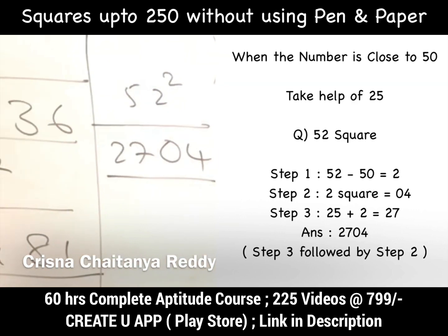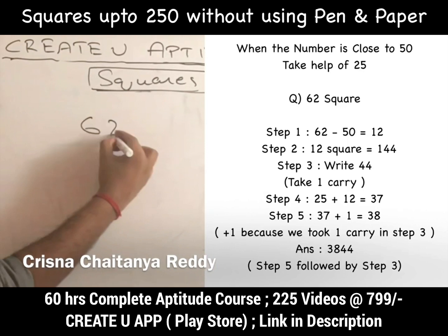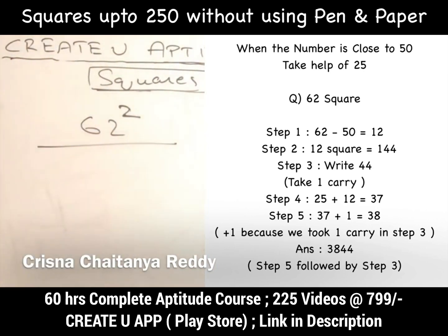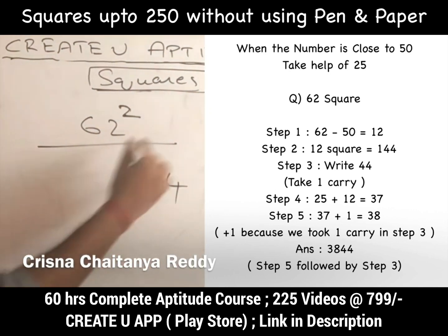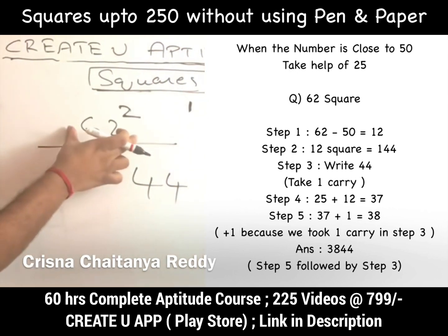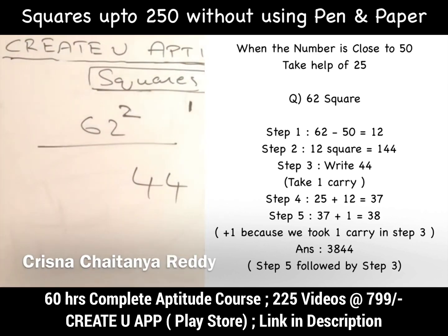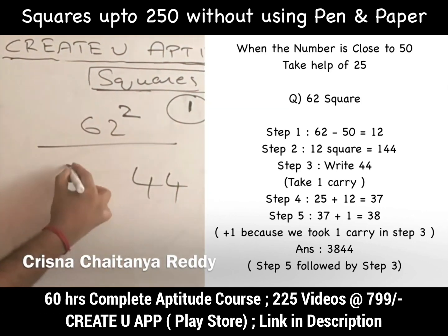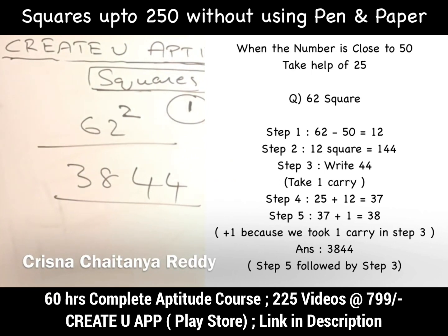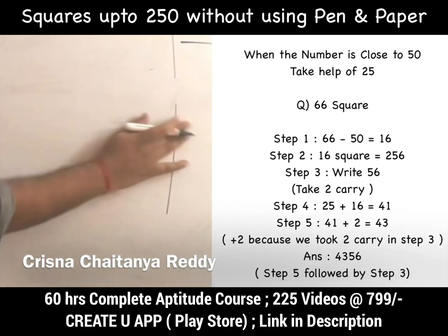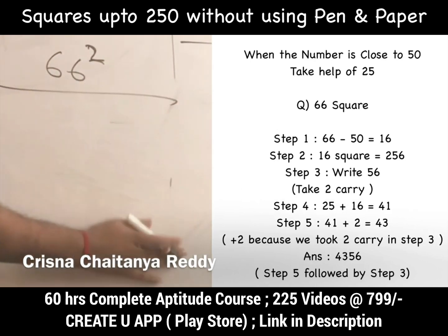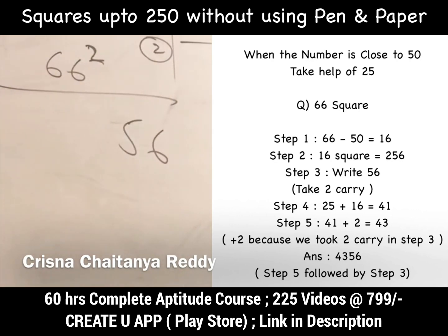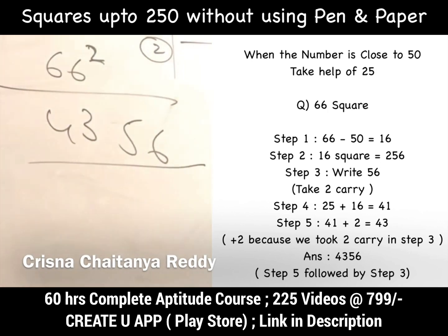For 62²: it is 12 more than 50. 12² = 144; write only 44 and carry 1. Since it is more than 50, add to 25: 25 + 12 = 37, plus the 1 carry = 38. Answer is 3844. For 66²: it is 16 more than 50. 16² = 256; write 56 with carry 2. 25 + 16 = 41, plus 2 = 43. Answer is 4356.